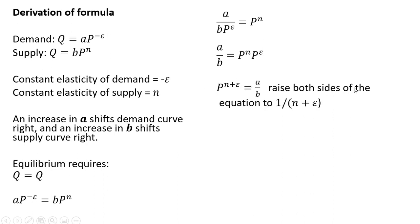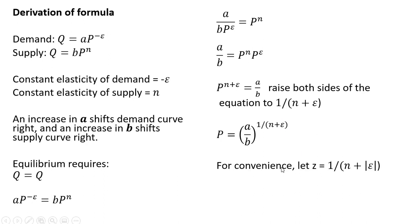Now we're going to raise both sides of the equation to 1 divided by the price elasticity of supply plus the price elasticity of demand, and we'll get this result. For convenience, we're going to let z equal the following, reminding us that e, the price elasticity of demand, goes in in absolute value — we're not going to plug in the minus. And so that simplifies to the following.